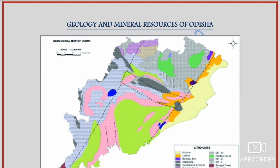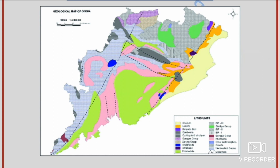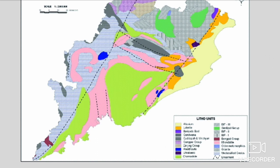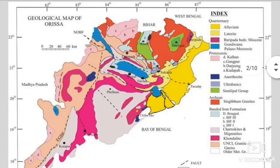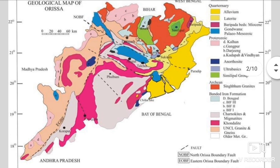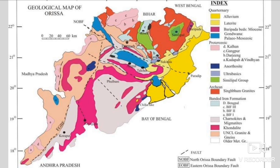This is a very simplified geological map of Odisha. Though it's not very clear, you can see famous localities like alluvium, laterite, boulder beds, and charnokite beds. The second map compiled by N.K. Mahalik sir is clearer. In that map you can see the green part, which is the most important Simlipal complex or Simlipal group.